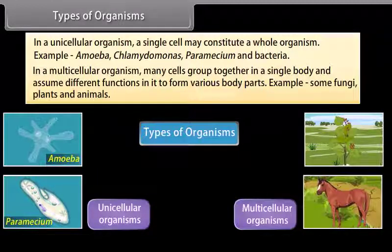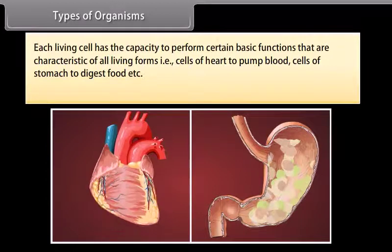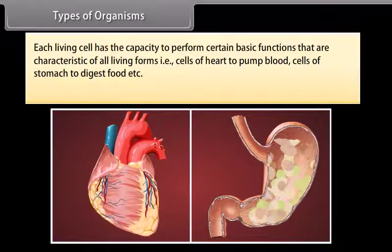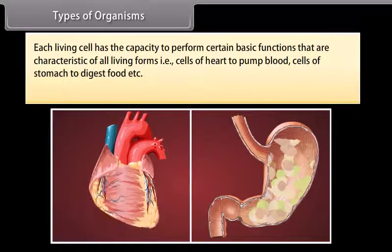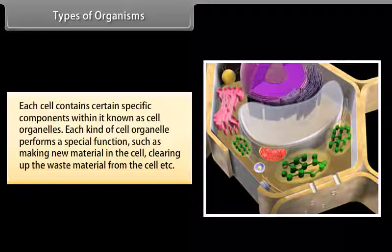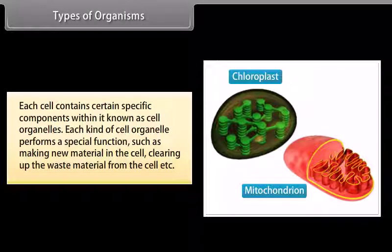Each living cell has the capacity to perform certain basic functions characteristic of all living forms — for example, cells of the heart pump blood, and cells of the stomach digest food. Each cell contains certain specific components within it known as cell organelles. Each kind of cell organelle performs a special function, such as making new material in the cell or clearing up waste material from the cell.